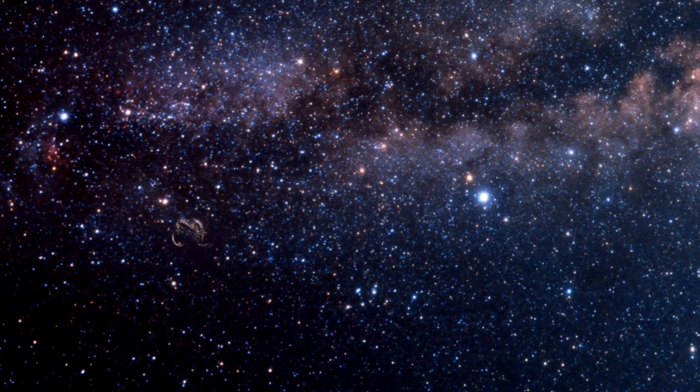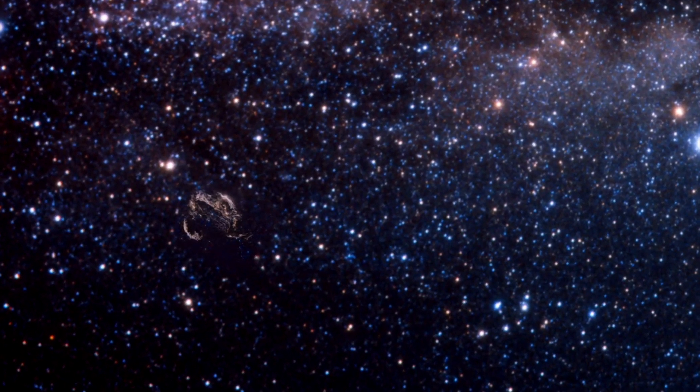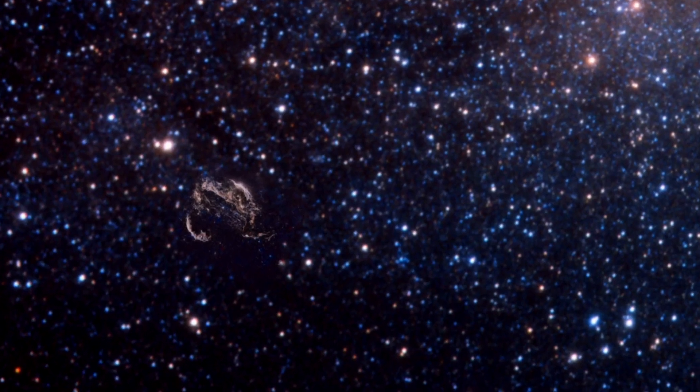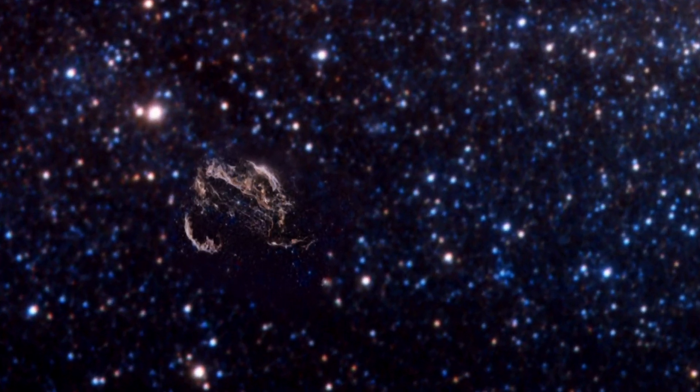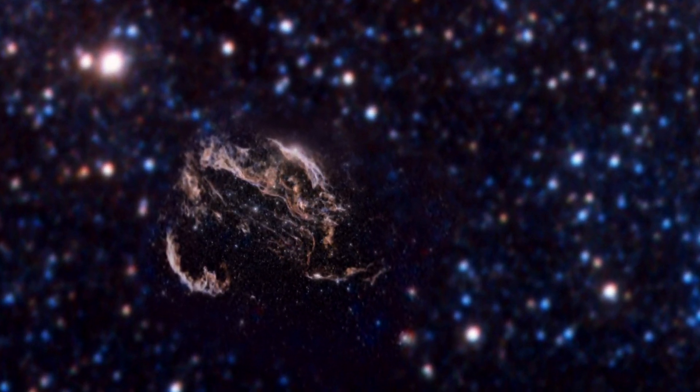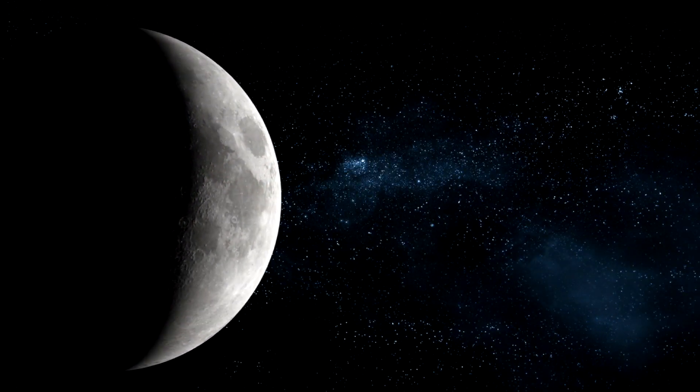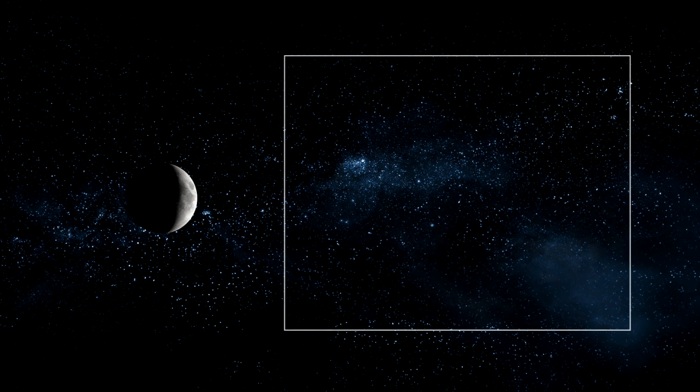Astronomers have pointed Hubble towards the constellation of Cygnus to observe the Veil Nebula in the wing of the Swan. Located at a distance of 1,500 light-years from Earth, the Veil Nebula, which is also known as Cygnus Loop, is one of the most spectacular supernova remnants in the sky. The entire shell spans some three degrees, corresponding to about six full moons.